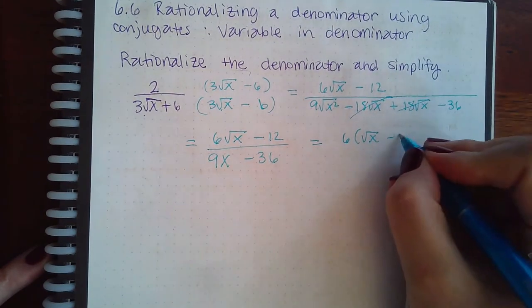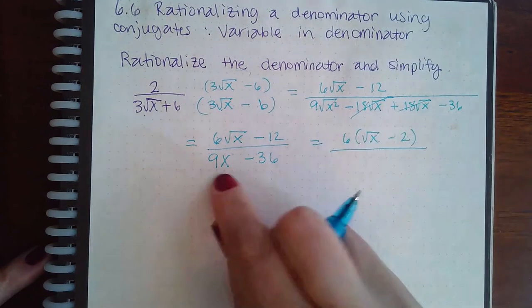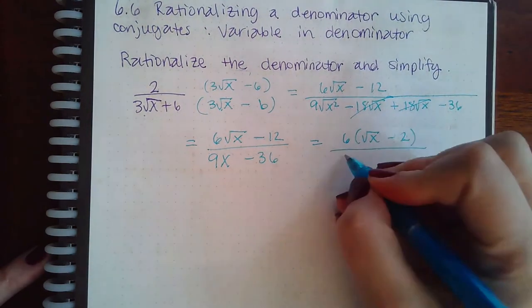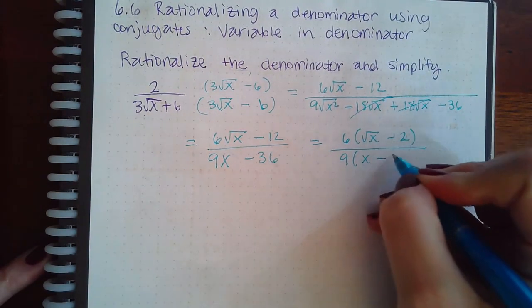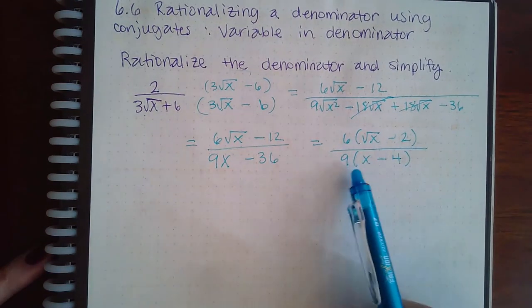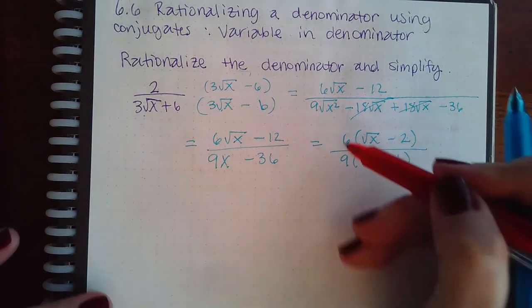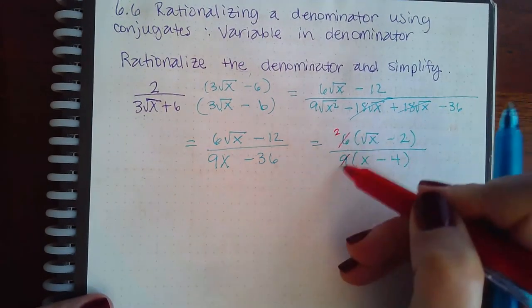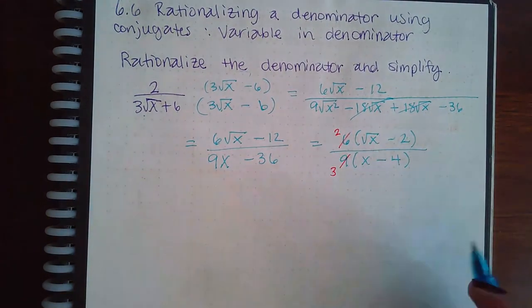And I can factor out a 9 from the bottom, which makes that x minus 4. And then the 6 and the 9 can reduce by 3, leaving me with a 2 and a 3. So you can leave your answer in its factored form.